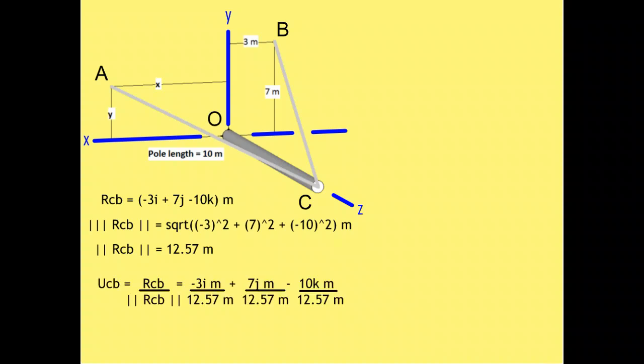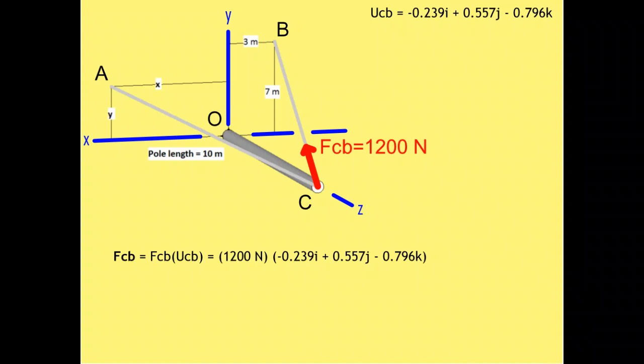With this we can calculate the unit vector of RCB by dividing each vector component by the vector's magnitude. Notice how this will make the vector unitless. We find that the unit vector from C to B is negative 0.239I, plus 0.557J, minus 0.796K. With that, we can find how the force FCB is distributed along this vector by multiplying FCB's value of 1,200 newtons by the unit vector CB. The result is: FCB equals negative 286.8N in the I direction, 668.4N in the J direction, and negative 955.2N in the K direction.